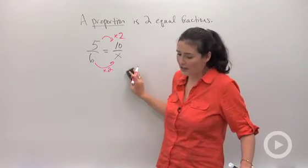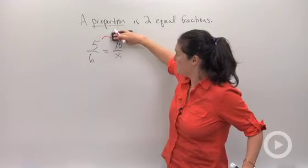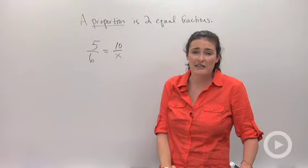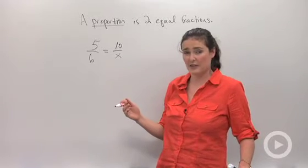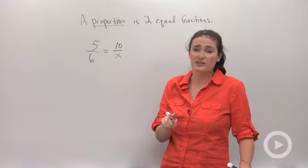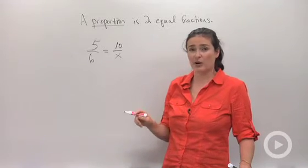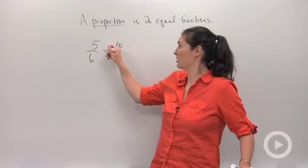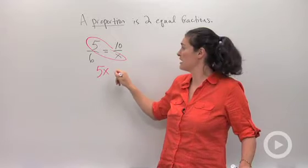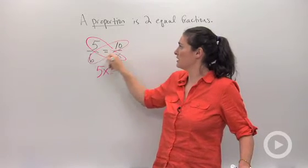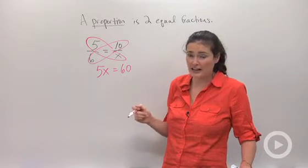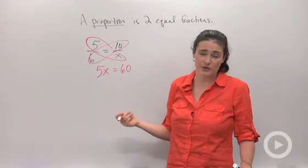Another way to look at it is to do what's called cross-multiplying. Cross-multiplying is where you multiply the diagonal quantities and set the products equal to each other. So here we go: 5 times x — that's my first product — is going to be equal to 6 times 10. You can kind of do this in your head to get x equals 12.